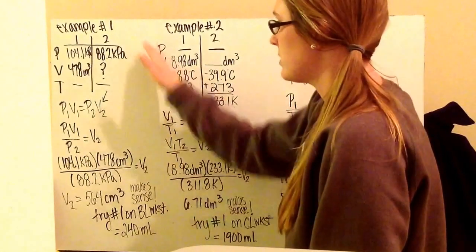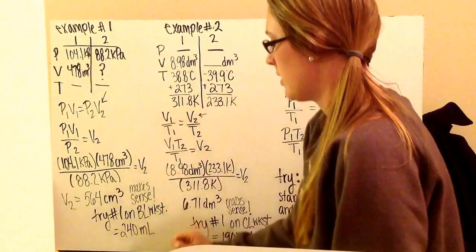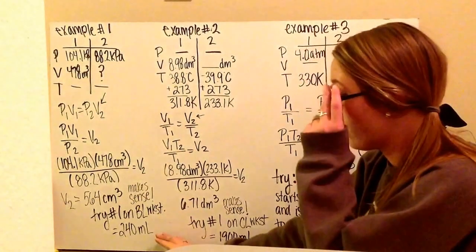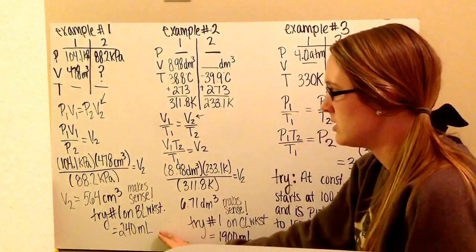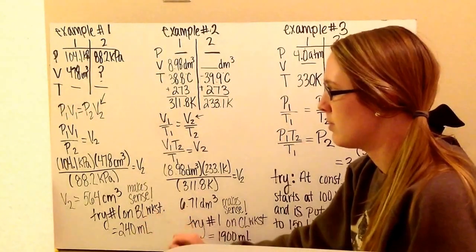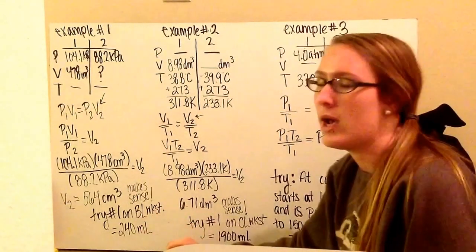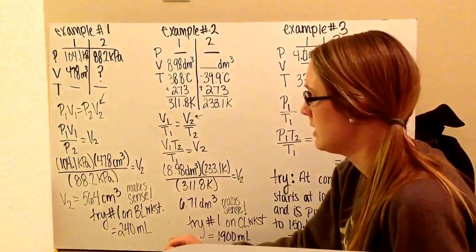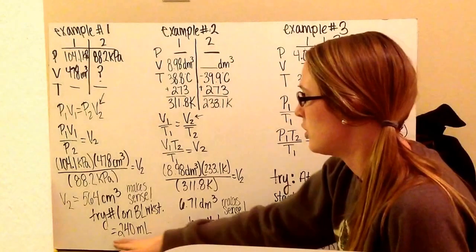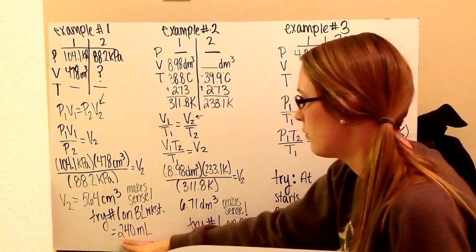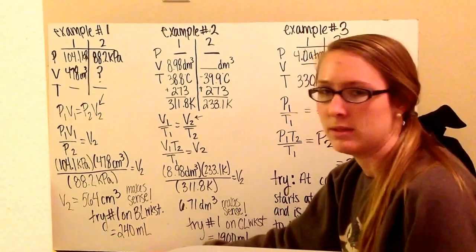I get 564 centimeters cubed. This makes sense because as my pressure is decreasing, they are inversely proportional, therefore my volume should increase. Once you've copied this down, try problem number one on the Boyle's Law worksheet. You should get an answer of 240 milliliters.